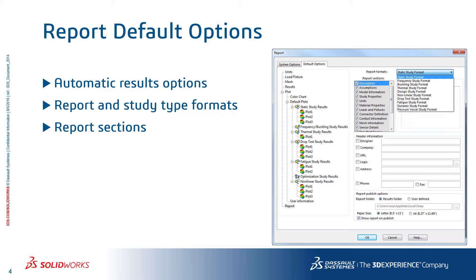In the top menu bar on the simulation, if you choose Options, then Default Options, you can choose the default plots as well as the default options for reports. The report formats are customized to the study type — you cannot add new formats to the list. On the report sections, you see all the topics available based on the selected study format. As new studies are created, the report options for a particular study can be changed within the newly created study.